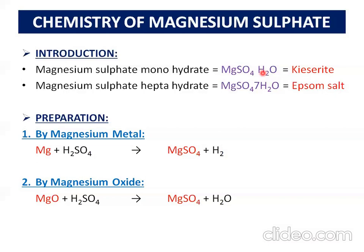There are common names that we have studied, such as caustic soda (NaOH), lime water, limestone, soda ash, washing soda, and baking soda. These are common names, and you should be able to write their chemical formulas.